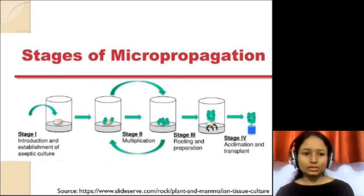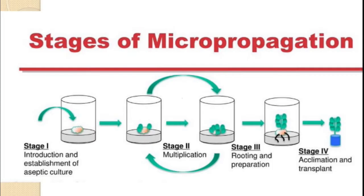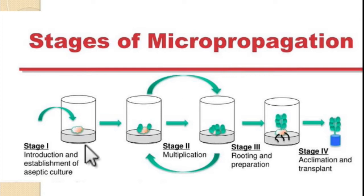The next slide shows the various stages of micropropagation as a pictorial representation. The first stage is the selection of the source plant, and after its surface sterilization it is introduced and established in the culture media — all under aseptic or sterile conditions. Then in the second stage, the explant is shifted to the proliferating media, resulting in shoot multiplication. This is also referred to as the multiplication stage.